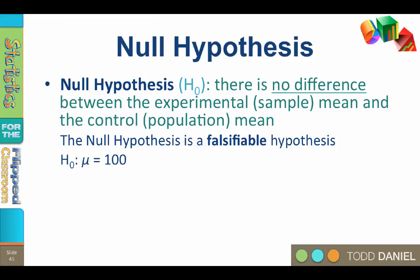The null hypothesis states that there is no difference between the experimental or sample mean and the control or population mean. Therefore any differences between the experimental mean and the control or population mean are due to chance. The null hypothesis is a falsifiable hypothesis. If the experimental sample was drawn from a population with a mean of mu equals 100, then the null hypothesis will state h sub zero colon mu equals 100.